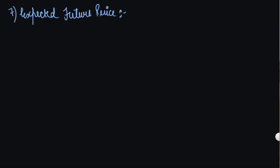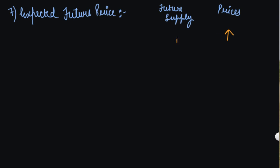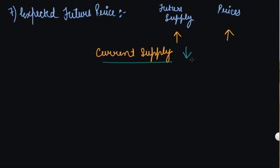The seventh is expected future prices. If you expect that prices will go up in the future, you will expect to supply more in the future. So in the current period, you will reduce your current supply, save your stock for the future, because the price will rise and you will sell more in the future — so current supply will be reduced.